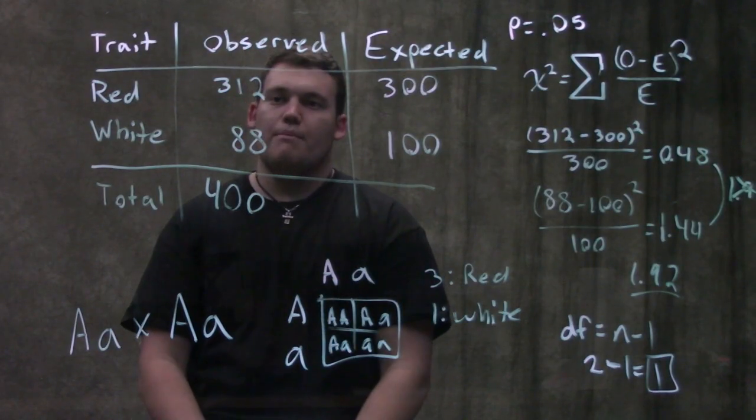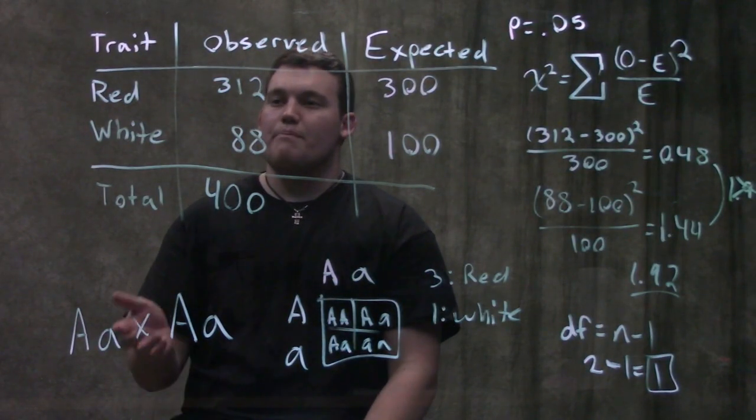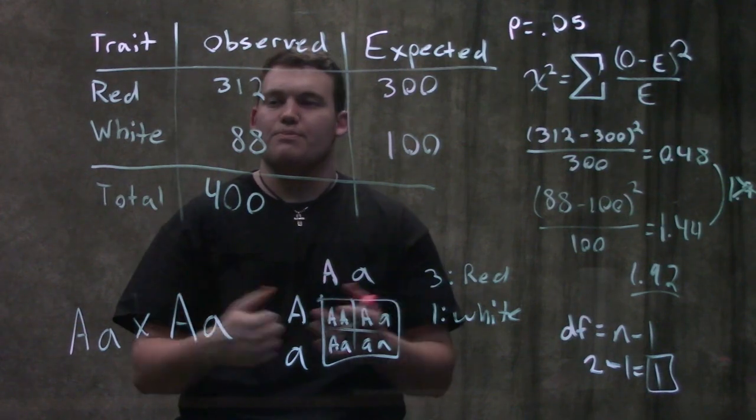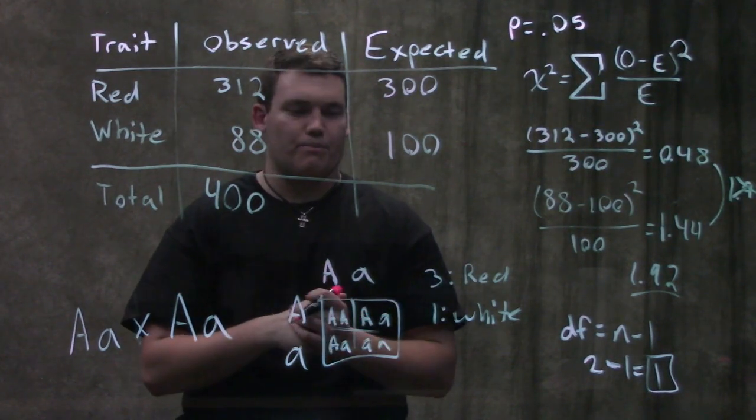Chances are if you flip a coin ten times, it's not gonna be 5 and 5. All we're trying to figure out here is, are these numbers close enough to where we can say, yeah, this probably is an autosomal dominant way of inheritance.